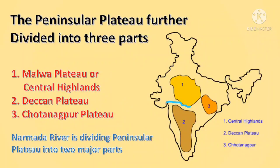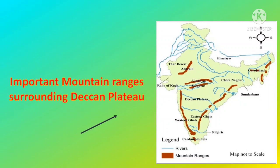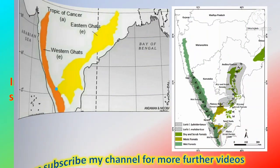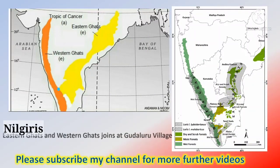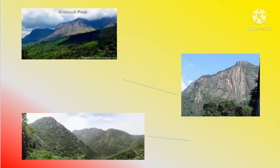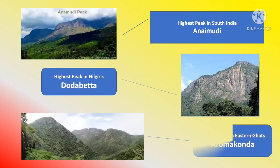The Narmada River divides the Peninsular Plateau into two major parts: the Deccan Plateau and the Malwa Plateau. Important mountain ranges surrounding the Deccan Plateau are the Vindhya ranges, Satpura ranges, Western Ghats, Eastern Ghats, and Nilgiri Hills. The Nilgiri Hills and Western Ghats meet at Gudalur village. The highest peak in South India and in the Anaimalai Hills is Anamudi. The highest peak in the Nilgiri Hills is Doddabetta, and the highest peak in the Eastern Ghats is Arma Konda.